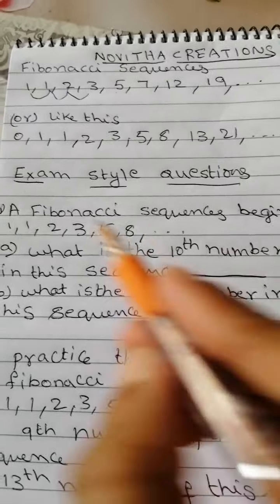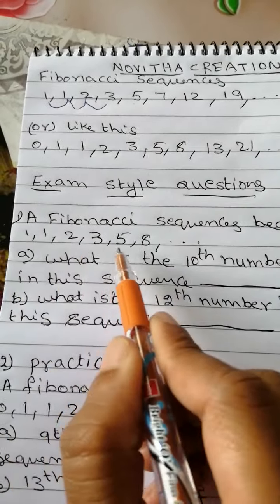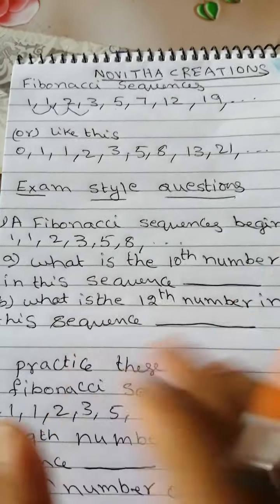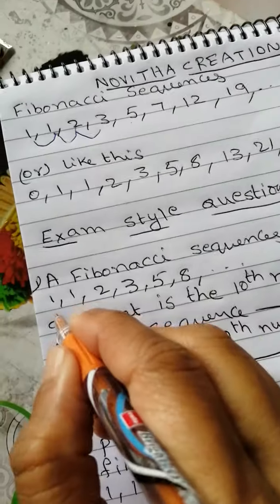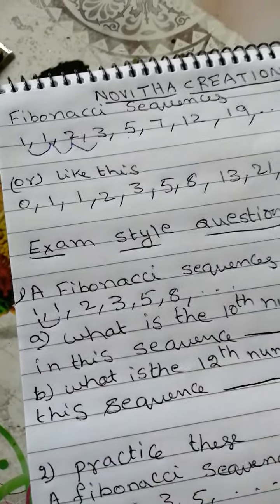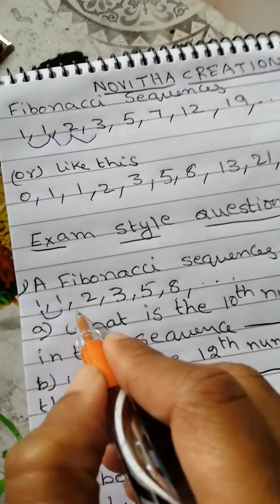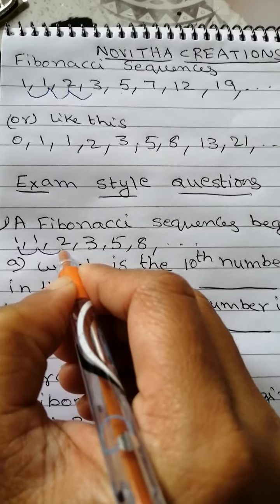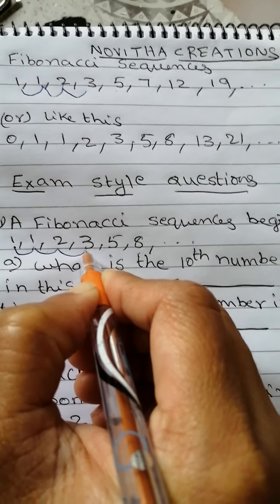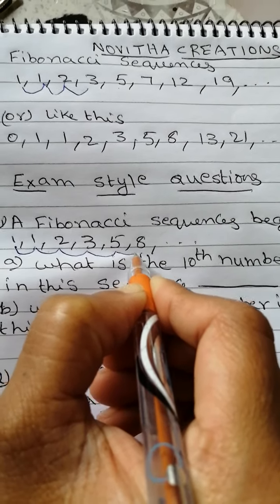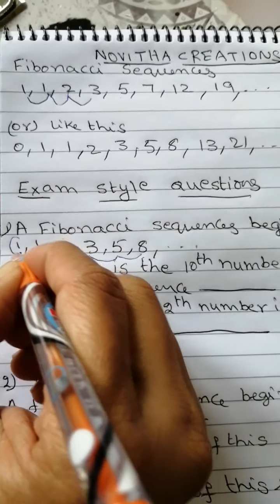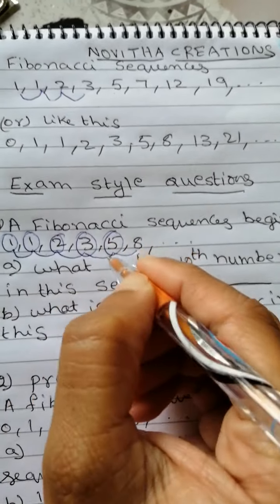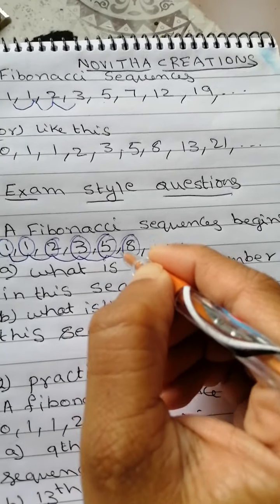A Fibonacci Sequence begins 1, 1, 2, 3, 5, 8. What is the 10th number in this sequence? We know that the previous terms will make another term. So 1 plus 1 equal to 2. Already we can see 1st term, 2nd term, 3rd number, 4th number, 5th number, 6th number. We need to make 7th number.